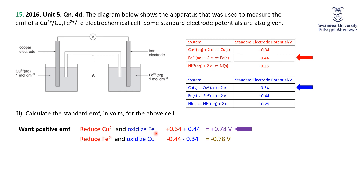The quick method is to look at the reduction half equations and flip the one with the more negative reduction potential — because flipping a more negative value turns it into a more positive oxidation potential, making the overall cell potential positive. Here, copper is plus 0.34 and iron is minus 0.44, so we flip the iron to get plus 0.44, making the whole cell positive. Generally: flip the one that is more negative, or equivalently, the less positive.